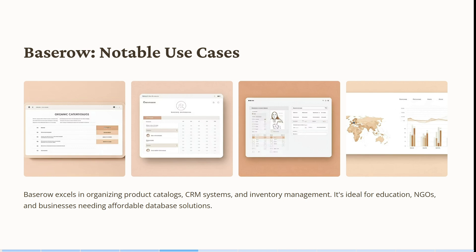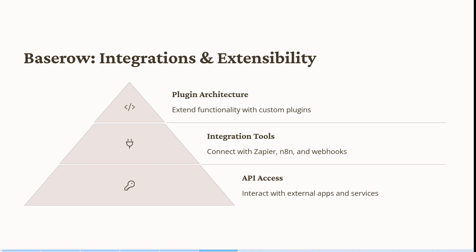Baserow excels in organizing product catalogs, CRM systems, and inventory management. It's ideal for education, NGOs, and businesses needing affordable database solutions. It features a plugin architecture so you can extend functionality with custom plugins. You can connect with Zapier, n8n, and webhooks, and interact with external apps and services through its API access.